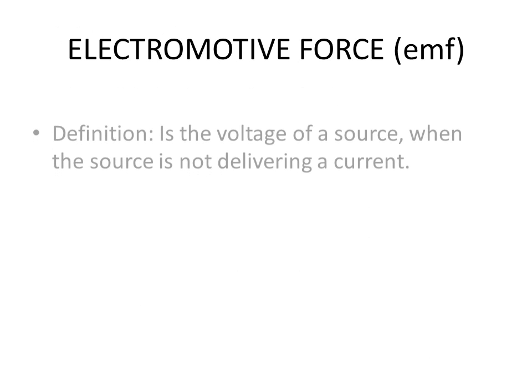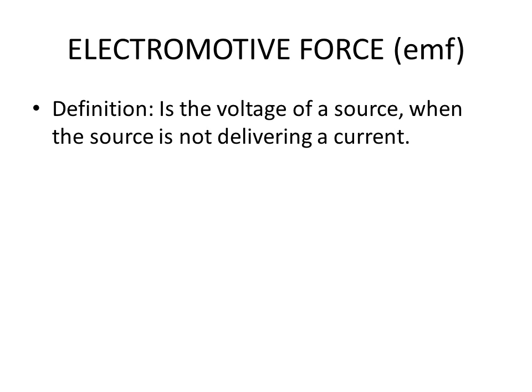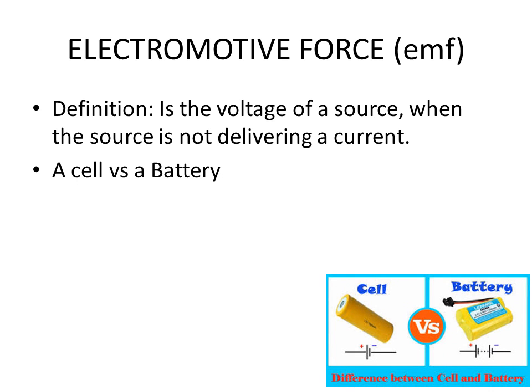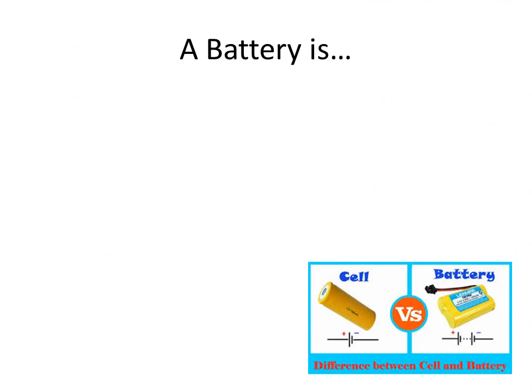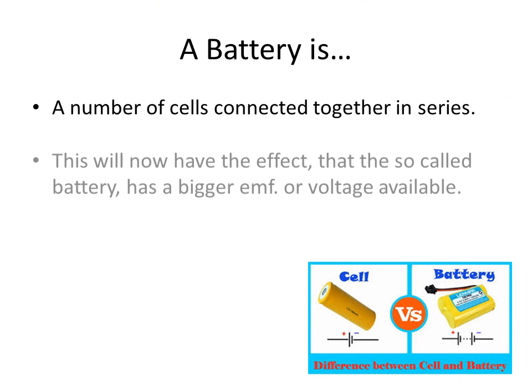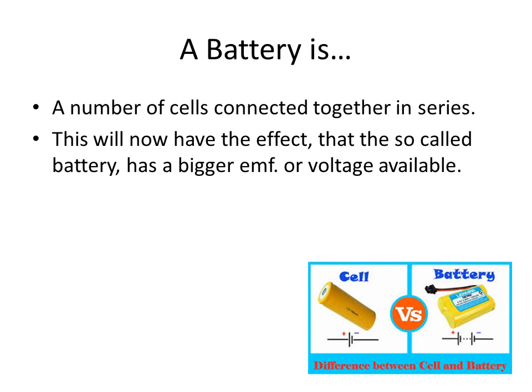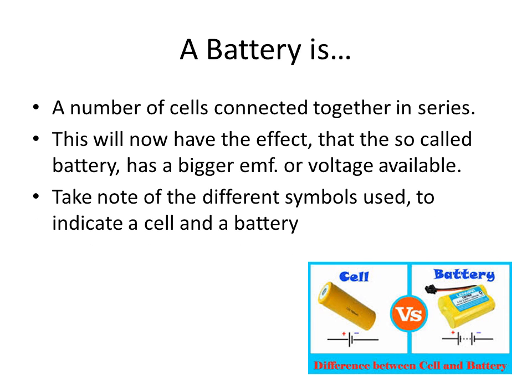EMF is short for Electromotive force. The definition declares the following: It is the voltage of a source when the source is not delivering a current. In other words, the source is disconnected or open circuit voltage. What is the difference between a cell and a battery? A cell possesses an internal resistance which causes a voltage drop if current flows through it. A battery is a number of cells connected together in series. This will now have the effect that the so-called battery has a bigger EMF or voltage available. Take note of the different symbols used to indicate a cell and a battery.